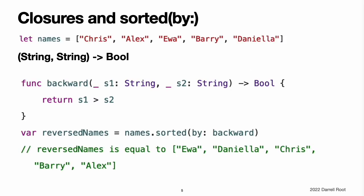The sorted method. Swift's standard library provides a method called sorted-by, which sorts an array of values of a known type based on the output of a sorting closure that you provide. Once it completes the sorting process, the sorted-by method returns a new array of the same type and size as the old one, with its elements in the correct sorted order. The original array is not modified by the sorted-by method.